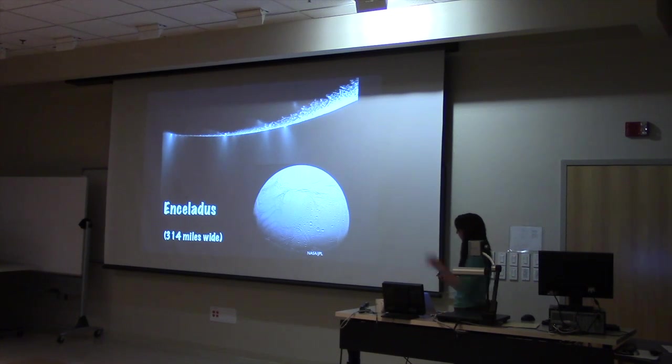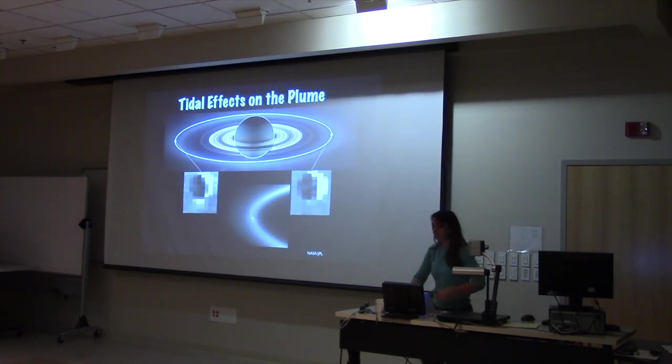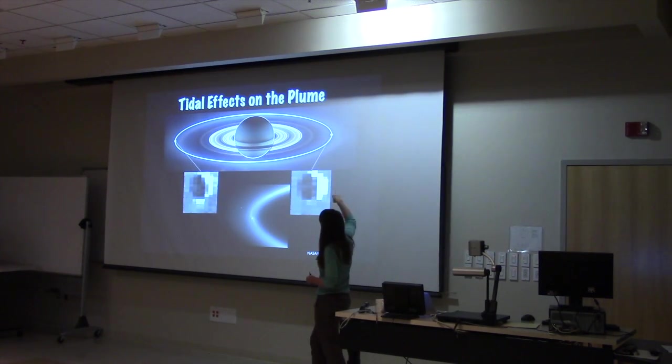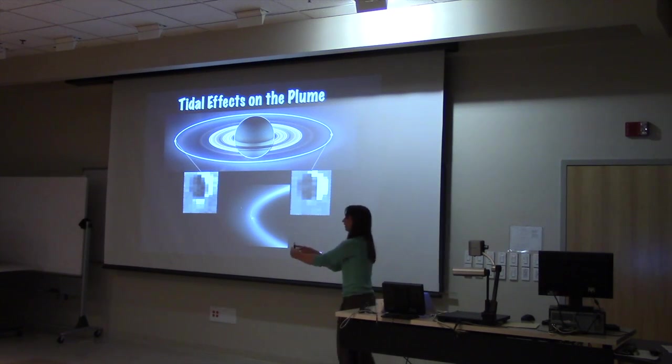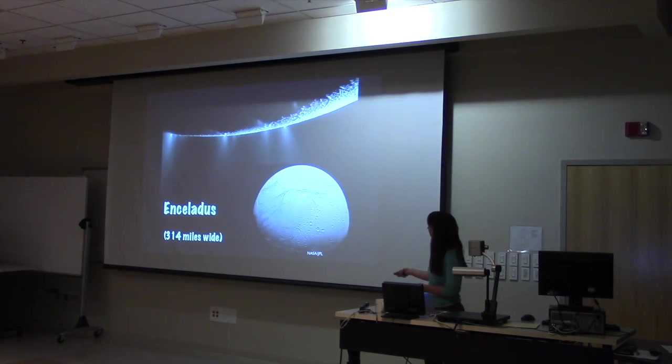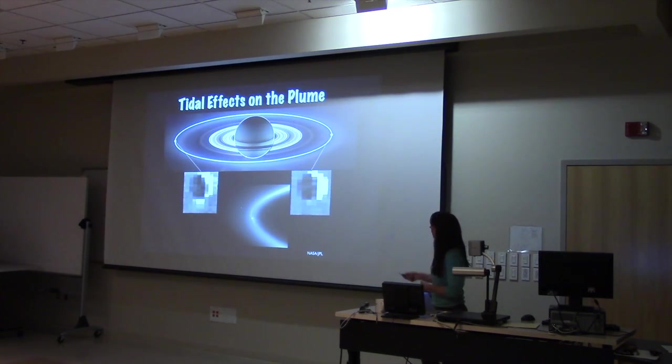Here again, an image of Enceladus. These plumes originate from this region here, which is known as the Tiger Stripes. So they kind of look like a cat just scraped the surface. And what's happening is Enceladus has a little bit of an eccentric orbit. So as it goes around Saturn, Saturn's gravitational pull on Enceladus actually deforms the moon, which melts the material inside the moon and perhaps widens these regions here and allows material inside the moon to escape and be expelled out into space.